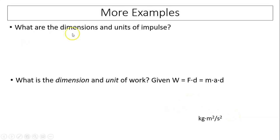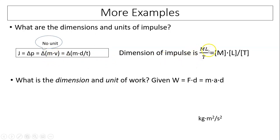What are the dimensions and units of impulse? Impulse is change in momentum, and this delta change has no unit. It is mass times velocity. Dimension of mass is M, and dimension of velocity is L over T. So the dimension of impulse is M times L over T. The unit for impulse is kilograms times meters divided by seconds.